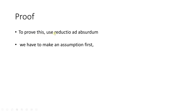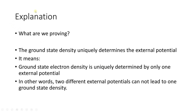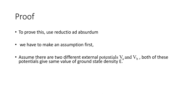To prove this, we use the reductio ad absurdum method: we make an assumption first and then prove that assumption to be wrong. Our assumption is that there are two different external potentials, V_A and V_B — two different arrangements of nuclei — and both of these potentials give the same value of ground state electron density. We are assuming the opposite of our statement in order to derive a contradiction.